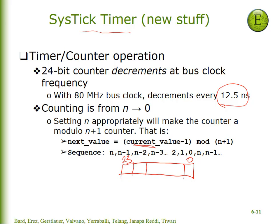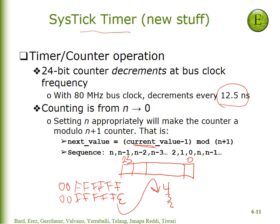We're going to set it up so it counts from 0xFFFFFF — six F's. Then 12.5 nanoseconds later it will count down again: 0x00FFFFFE, then D, C, B, A, and eventually it will get down to small numbers: 4, 3, 2, 1, 0. After it gets to 0 it will reload back to 0xFFFFFF, and this happens over and over again.